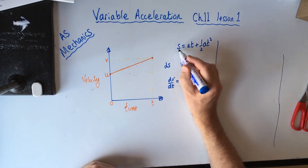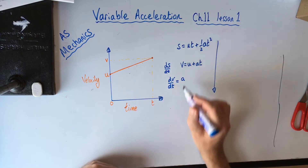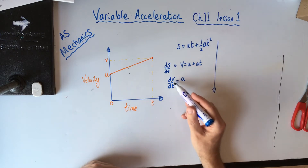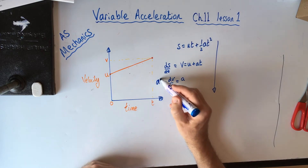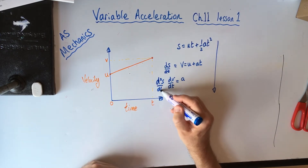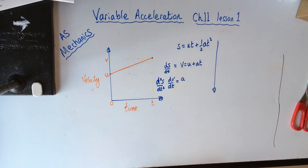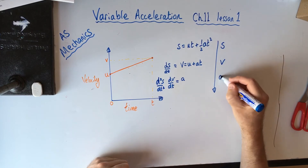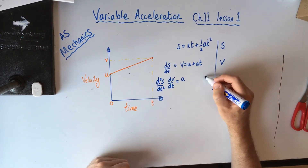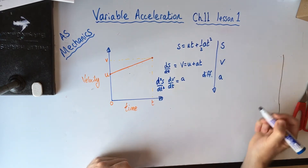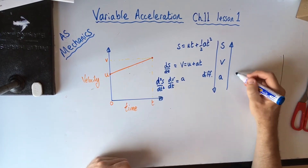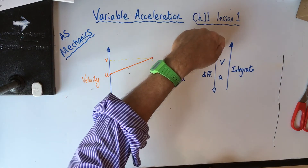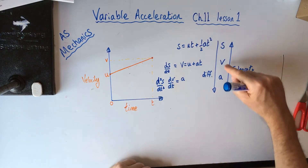The order going down is: if we differentiate displacement we get velocity, and if we differentiate again we get acceleration. Going the other way, if we start with acceleration and integrate, we get velocity, and integrating velocity gives us displacement. Remember: s, v, a — differentiate down, integrate up.